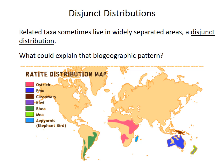So how might such a distribution arise? Well, one possibility is that there were once species connecting all these now isolated groups, and that the gaps that we see were caused by extinctions of those connecting species. That's a possibility, but we're not going to consider that one anymore today.